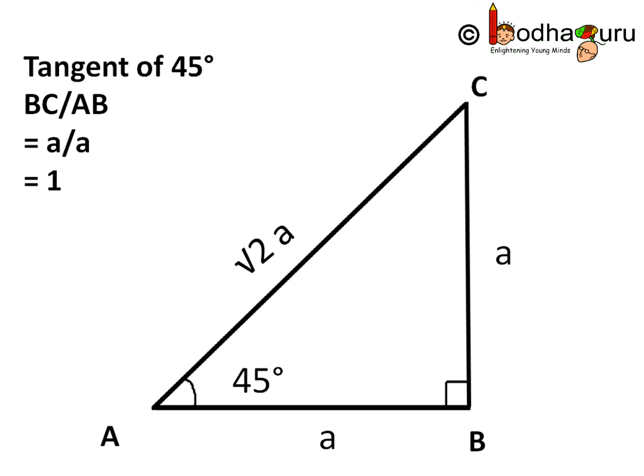And tangent of 45 degree is equal to BC, the opposite side, by adjacent side AB. Both are A. So A by A cancels, and we are left with 1. So tangent of 45 degree is equal to 1.